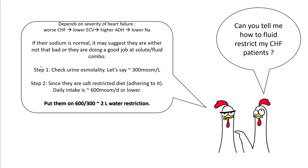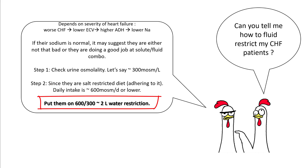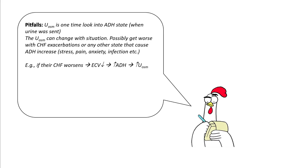If they are hyponatremic, check their urine osmolality. If their urine osmolality is around 300 milliosmoles per litre and they are eating a salt restricted diet and adhering to it — around 600 milliosmoles per day — you can put them on around 2 litres of water restriction and they should be able to maintain their sodium levels. However, if they are not eating that well, your water restriction has to be more strict. One pitfall: checking urine osmolality is a one-time look into the ADH state at the moment that urine was sent.